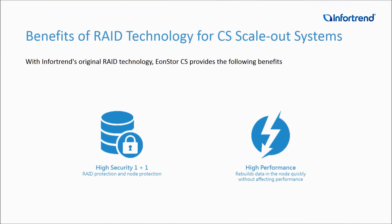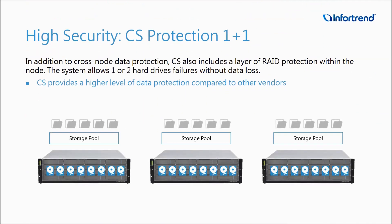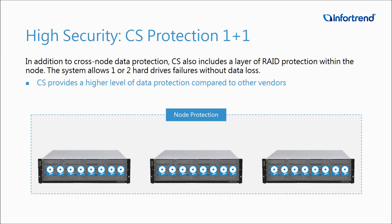The embedded RAID technology of InfoTrend also brings two advantages to EonStore CS: the first is high-security 1 plus 1, and secondly, it's high-performance. Looking at high security, compared to traditional scale-out NAS, CS provides an additional layer of node protection in addition to data protection across nodes. Through RAID protection, the system allows one or two hard drives to fail at the same time and data will not be lost, providing a higher level of data protection in comparison with existing on-the-market solutions from other vendors.